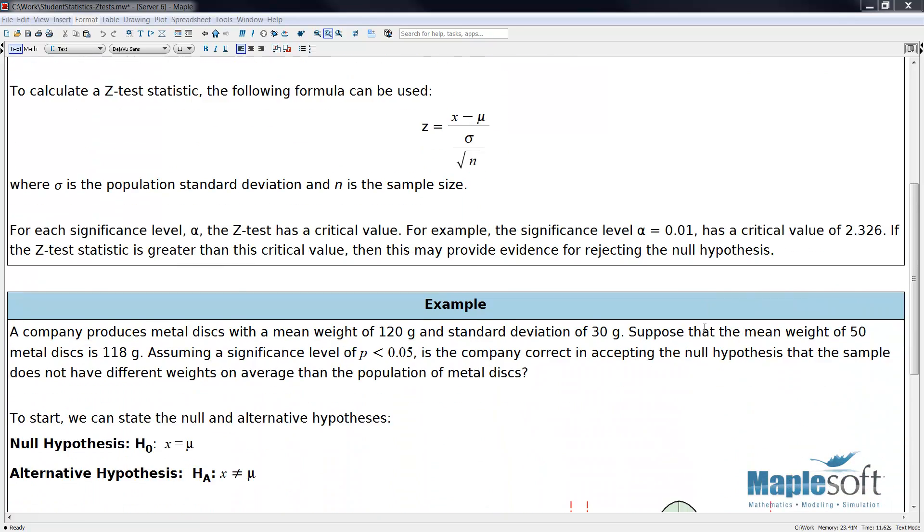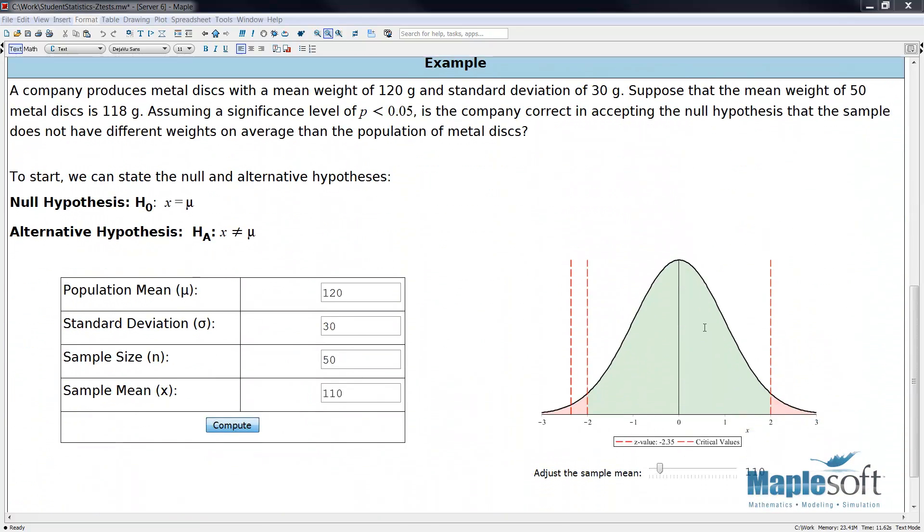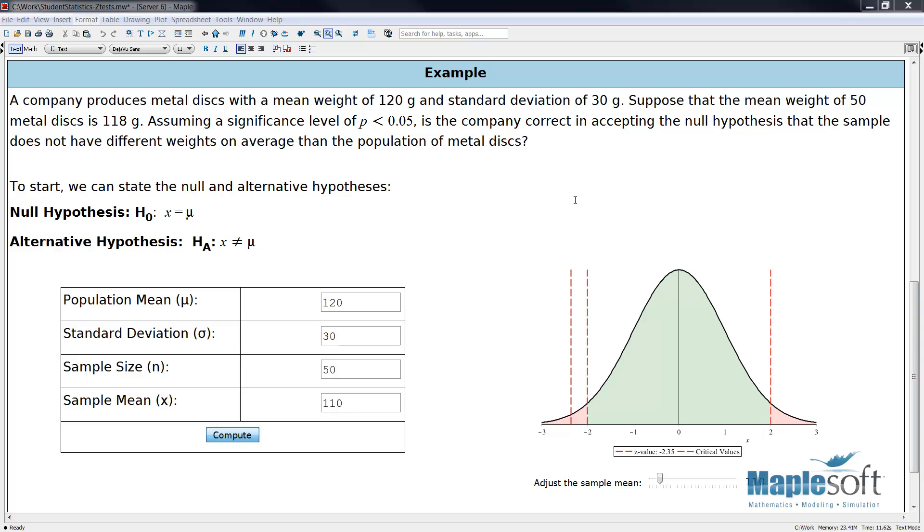Let's walk through an example. A company produces metal disks with a mean weight of 120 grams and standard deviation of 30 grams. Suppose the mean weight of 50 metal disks is 118 grams. Assuming a significance level of α < 0.05, is the company correct in accepting the null hypothesis that the sample does not have different weights on average than the population of metal disks?